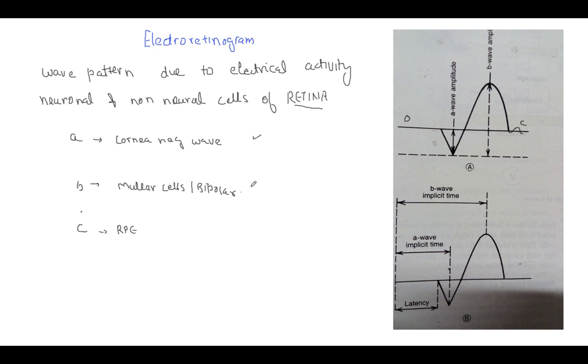The C-wave is due to the retinal pigment epithelium. The A-wave and B-wave are the most important waves, while the C-wave is inconsistent—sometimes seen and sometimes not. Electroretinogram is a record of change in the resting potential of the eye when light is shown. It is a corneoretinal potential.